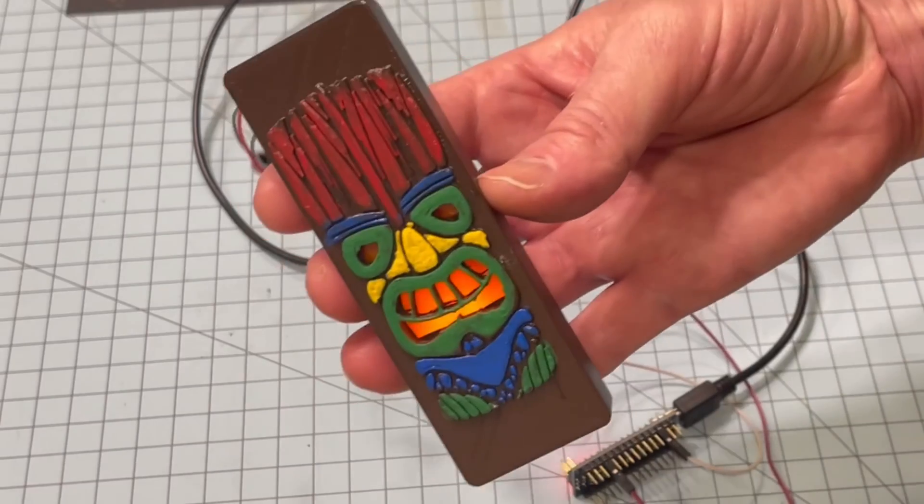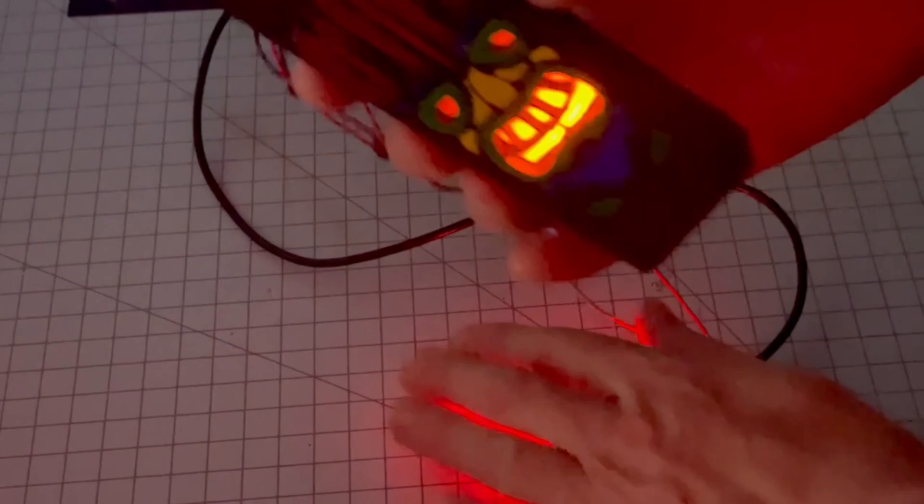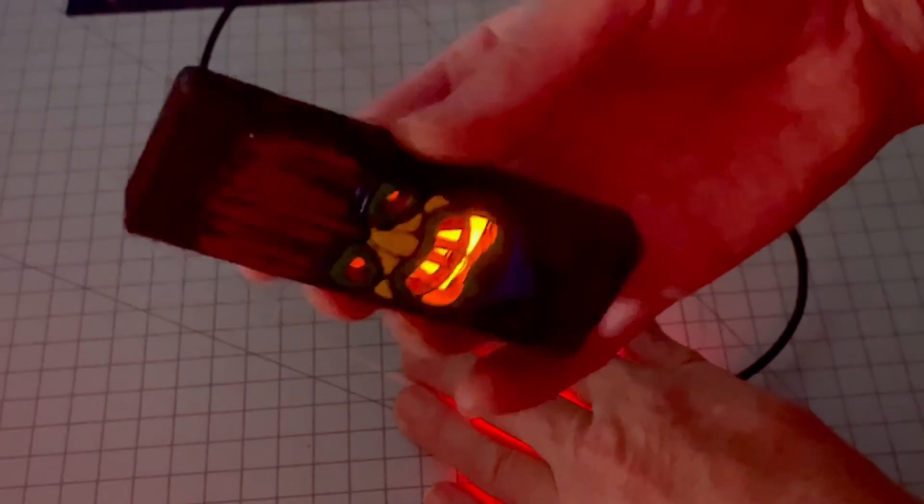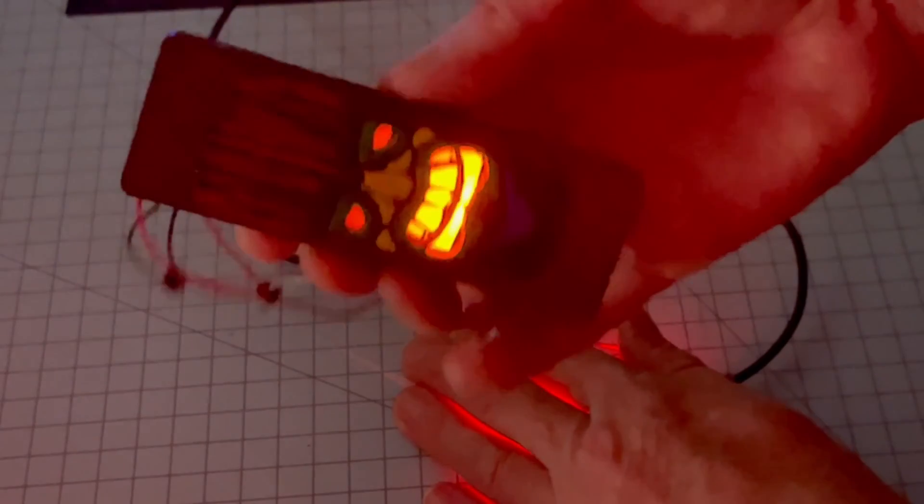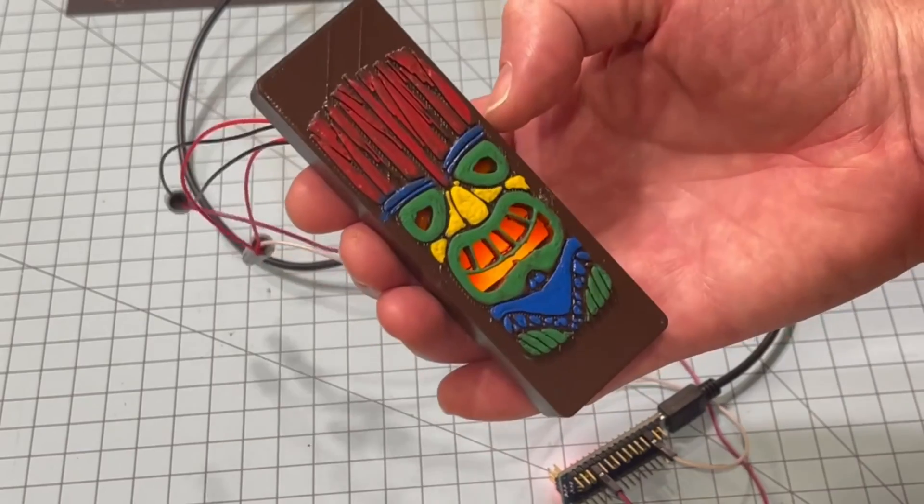So I'll shut the light off here. It's pretty bright for just two LEDs. That's the aluminum tape going through orange acrylic. So I hope you guys like the Tiki torch.